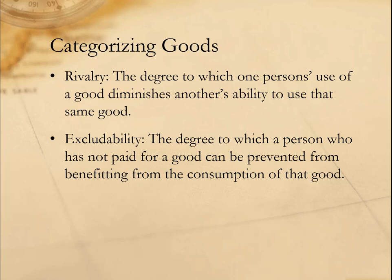Excludability refers to the degree to which it's possible to prevent someone who hasn't paid for a good from benefiting from the consumption of that good. I have keys to prevent someone from driving my car, I have a password to protect my computer, and so on. When it's not possible to prevent someone from using a good because of the characteristics of that good, it's said to be non-excludable. It's not possible, for example, to prevent someone from breathing clean air or to prevent a ship at sea from using a lighthouse. So these are examples of non-excludable goods.